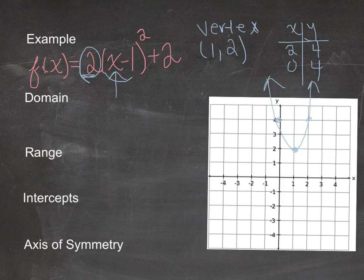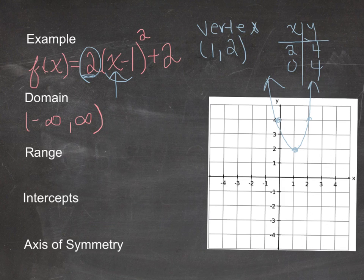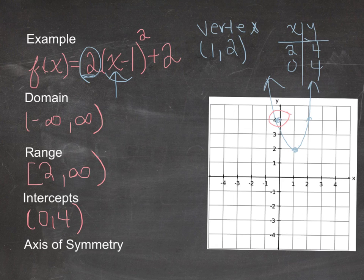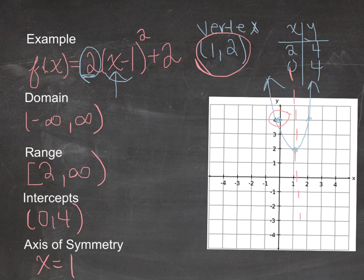The domain of this parabola is all real numbers, from negative infinity to positive infinity, because I could draw a line from the function to any point on the x-axis. The range, however — since it opens upwards and has a minimum — starts at the minimum y-value of 2 and goes up to positive infinity. There are no x-intercepts, but there is a y-intercept at (0, 4). The axis of symmetry is the x-value from the vertex, which was (1, 2), so the axis of symmetry is x = 1.